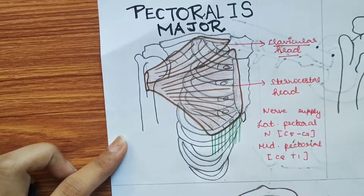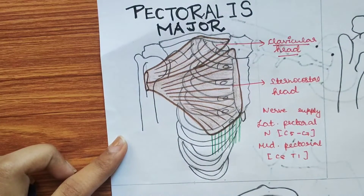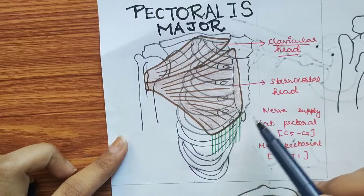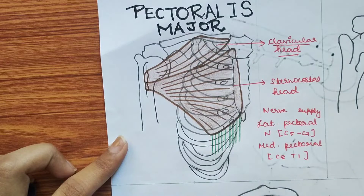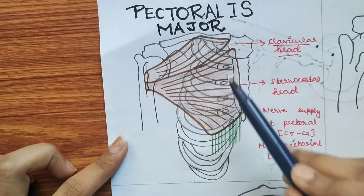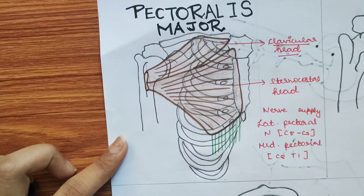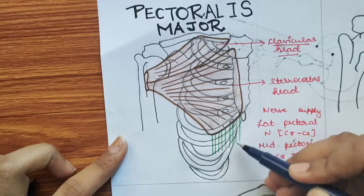The sternocostal head arises from the sternum and costal cartilages — specifically the lateral half of the sternum (anterior aspect), from the second to sixth costal cartilages, and also from the aponeurosis of the external oblique muscle.